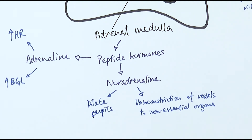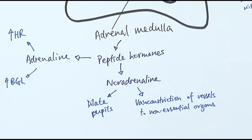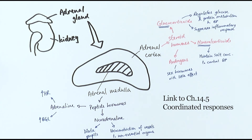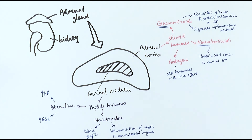To summarize: the adrenal medulla is the middle part of the adrenal gland, releasing peptide hormones — adrenaline and noradrenaline — when stimulated by the sympathetic nervous system for a stress response. These hormones increase heart rate, increase blood pressure, dilate pupils, and redirect blood flow to more essential organs. It's important to remember that later, when we look at coordinated responses, we'll see how the nervous system and the endocrine system work together to enable the body to respond to a stress signal.